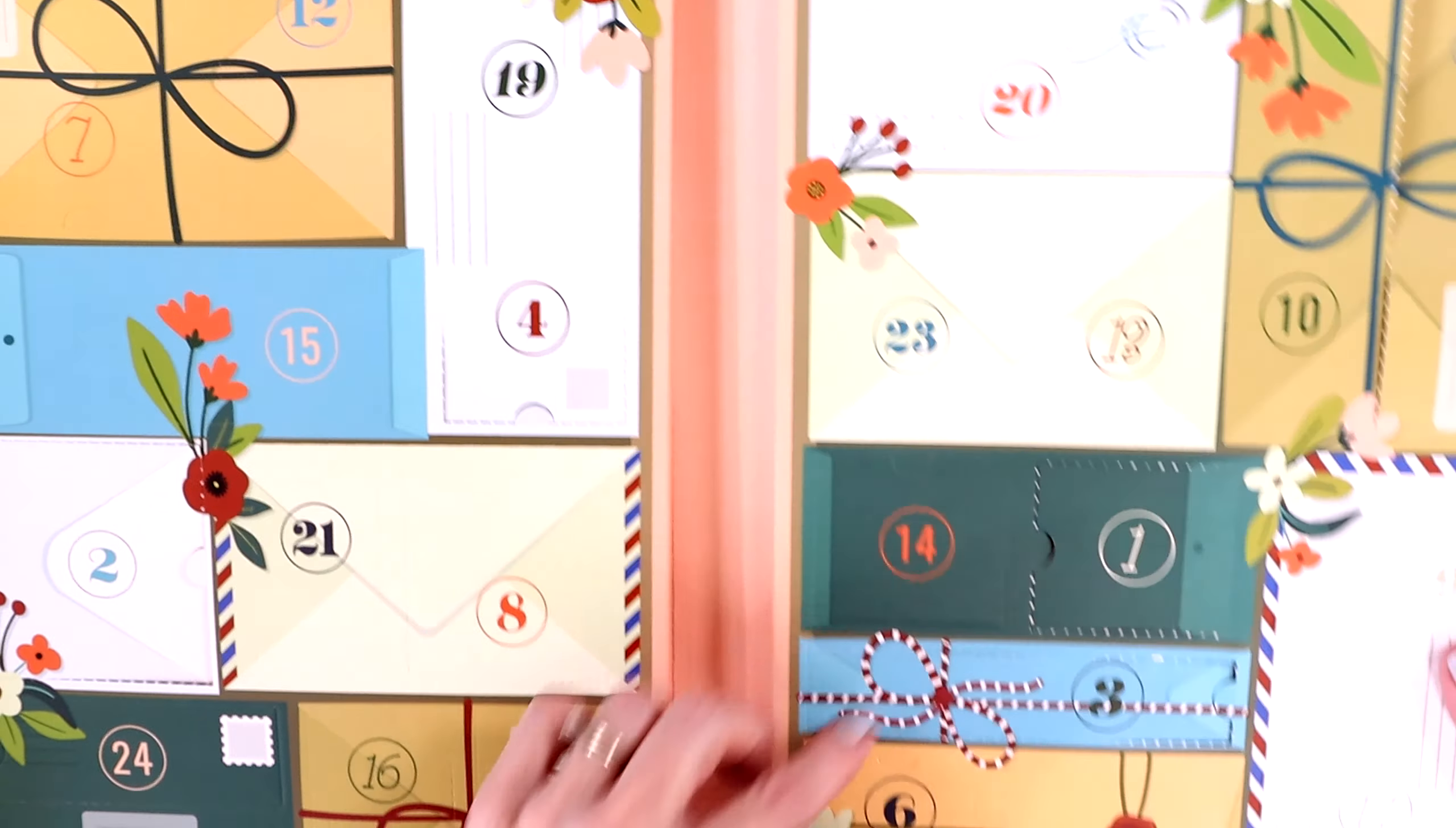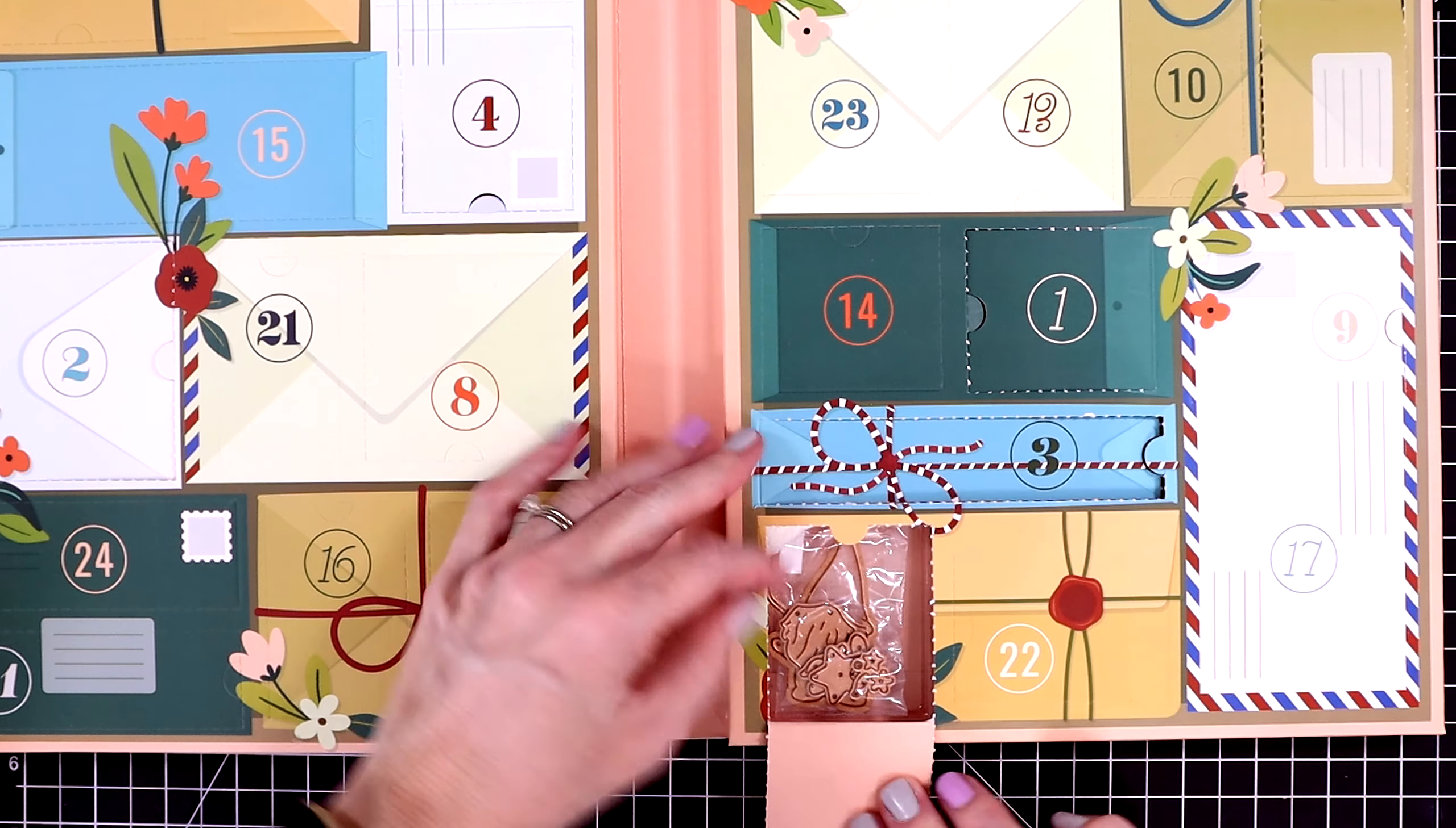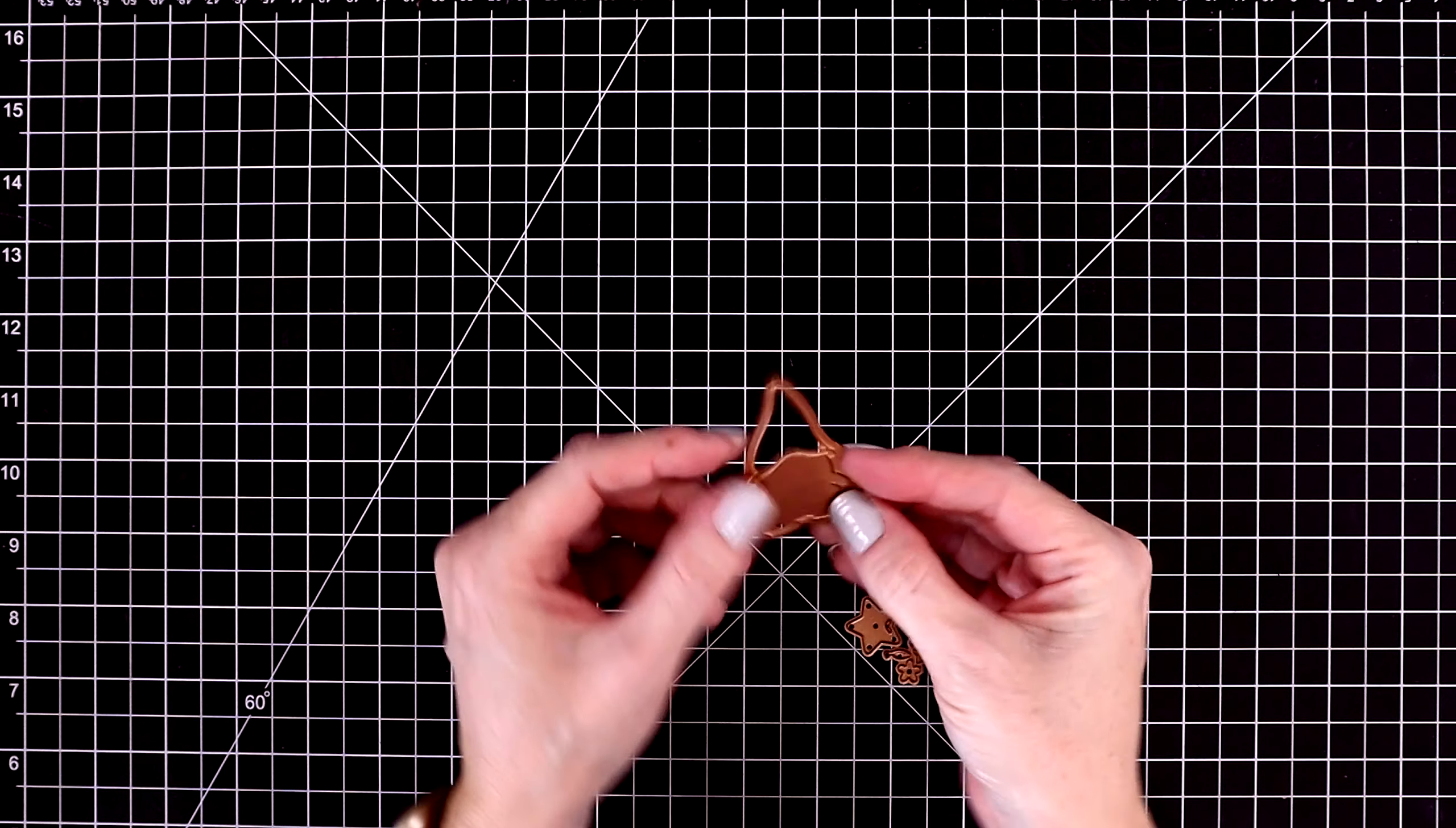Hello everyone, we are up to day six on Spellbinders crafty advent calendar. Let's find the door and pop this open and see what we're going to be playing with today. It looks like another die set, let's pull this out and see what it includes.